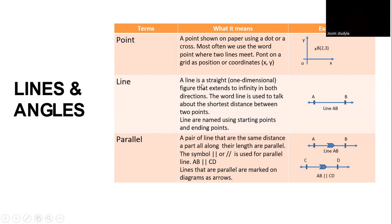A line is a straight, one-dimensional figure that extends to infinity in both directions. The word line is used to talk about the shortest distance between two points, A to B, so lines are named using starting and ending points. A pair of lines that are the same distance apart all along are parallel. For example, AB is parallel to CD, and parallel lines are marked on diagrams with arrows.